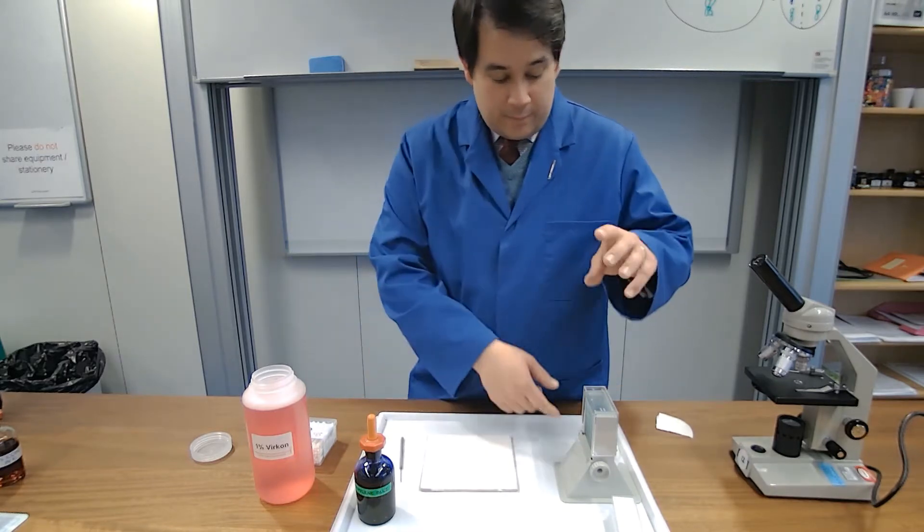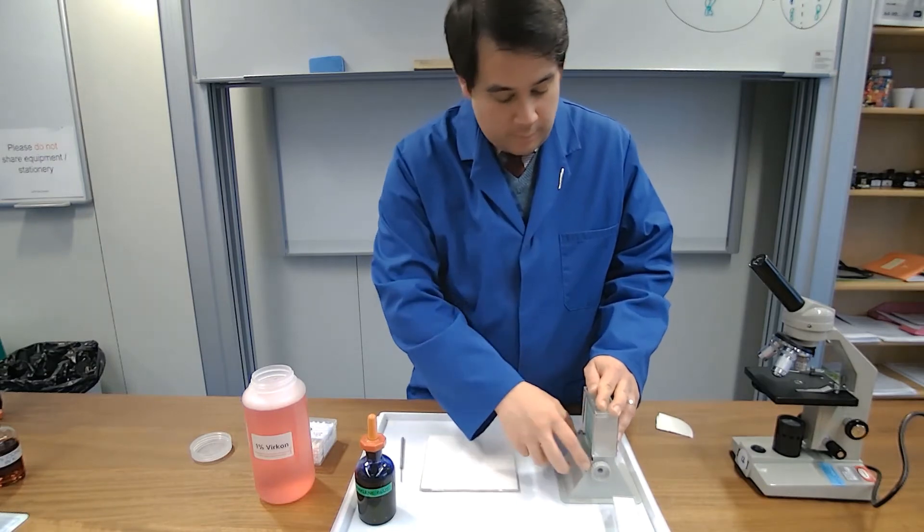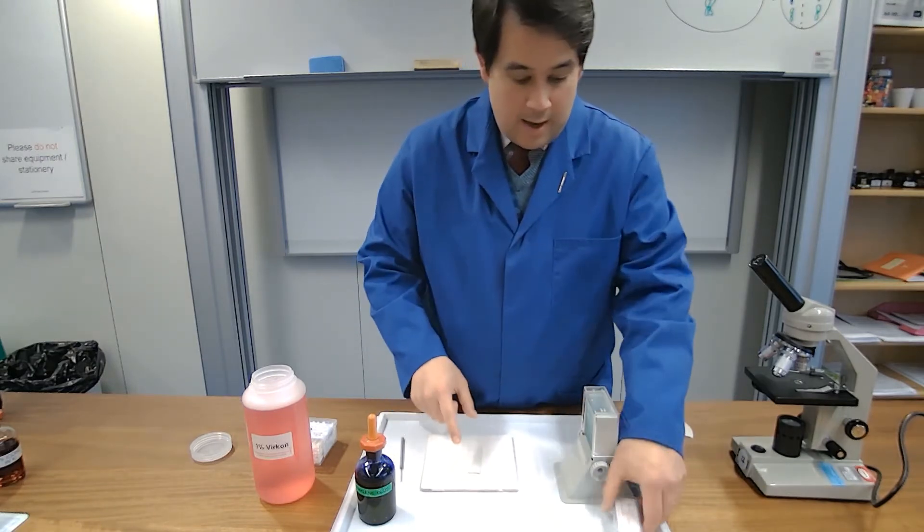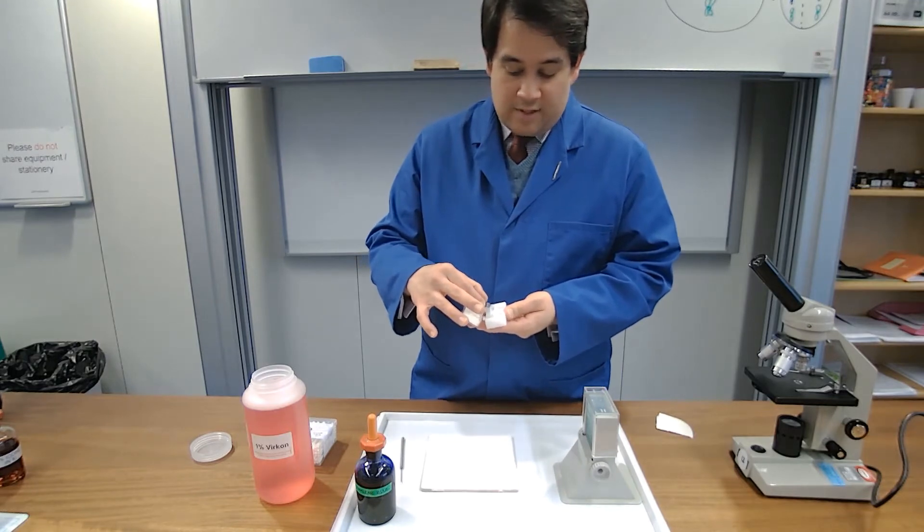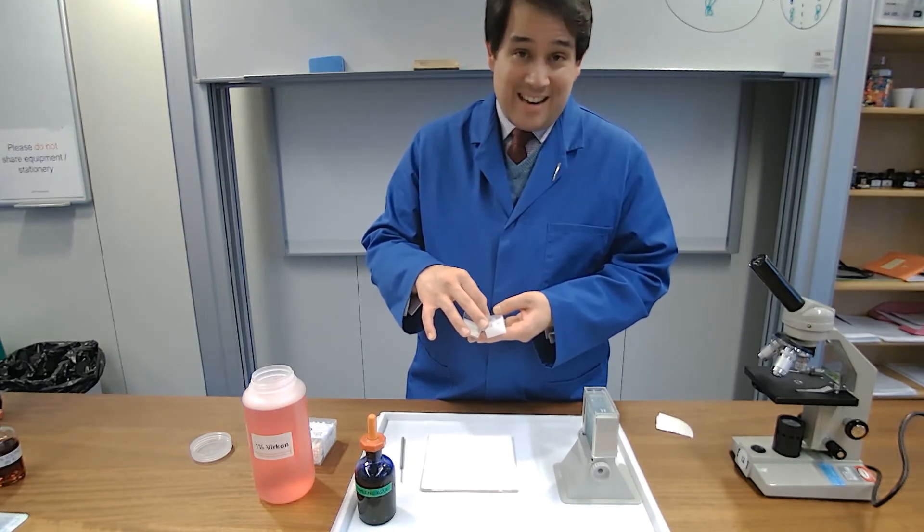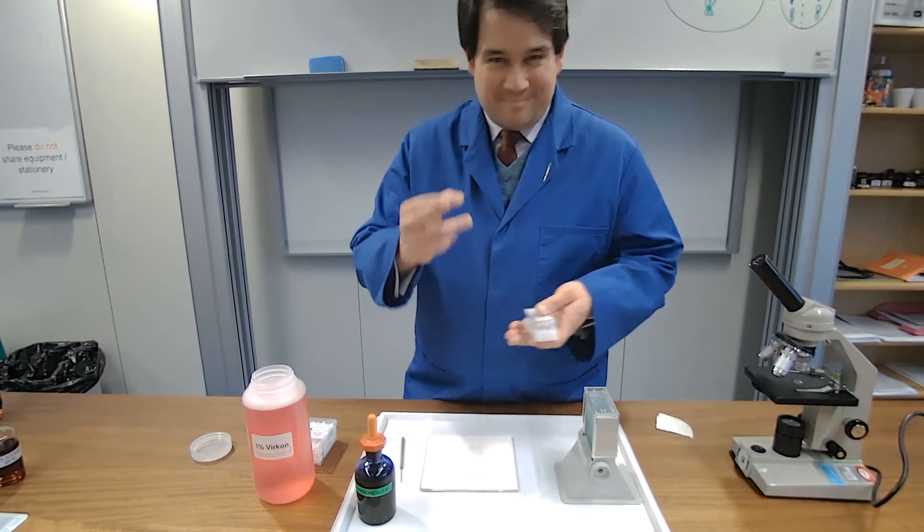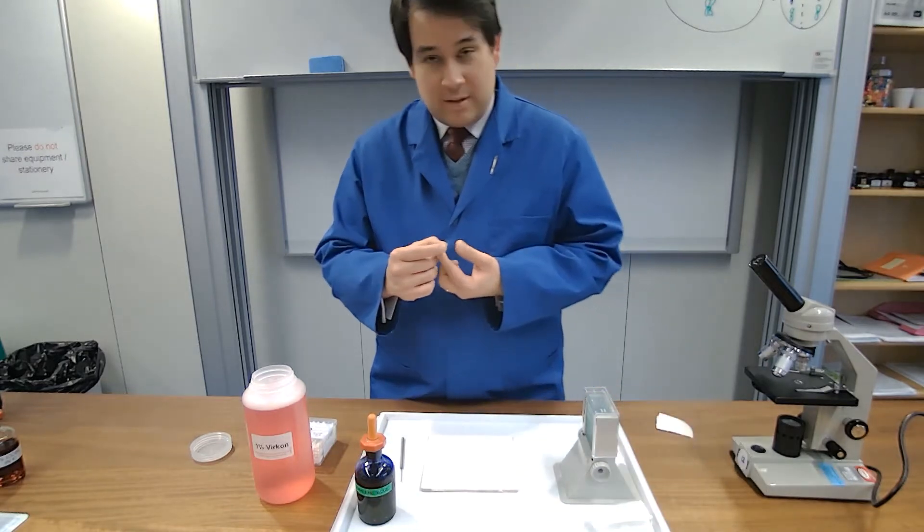First things we need, a slide from my slide dispenser, a cover slip, which is another small piece of glass. The cover slip goes on the slide - slip and slide, there you go, easy way to remember this stuff.